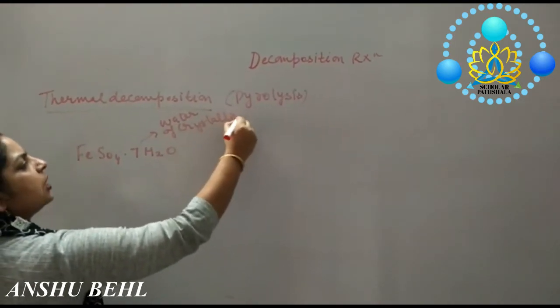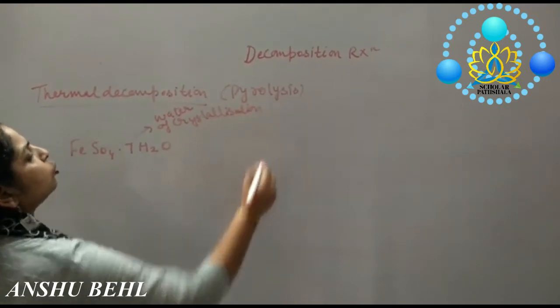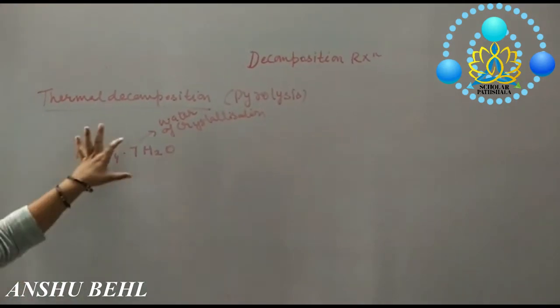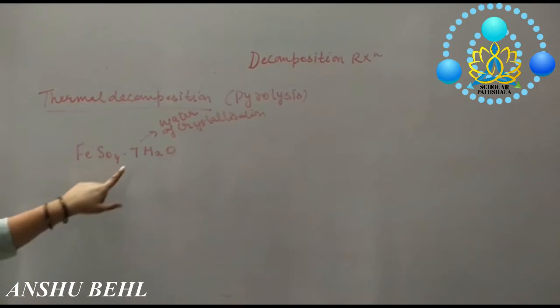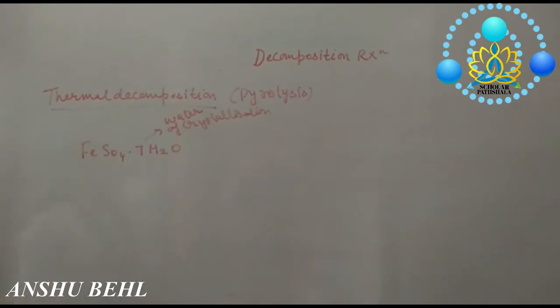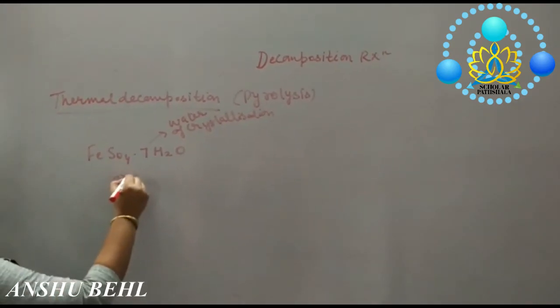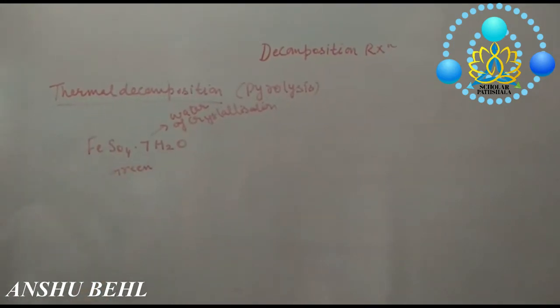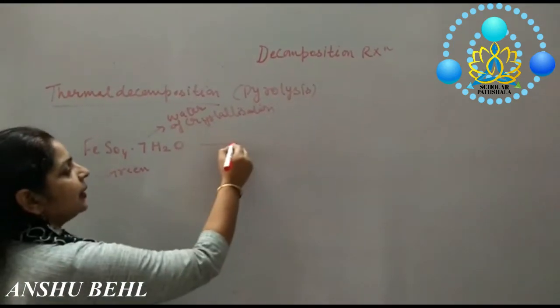Inorganic compounds are mostly colored due to presence of this water of crystallization. These are loosely held molecules which are present with a compound. So Ferrous Sulphate is light green in color.